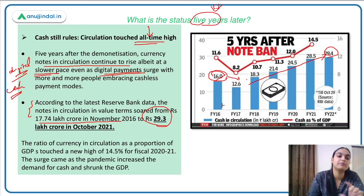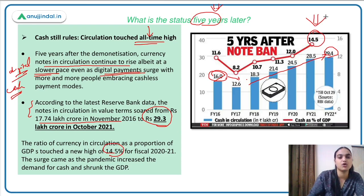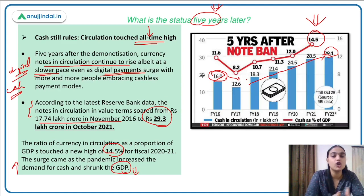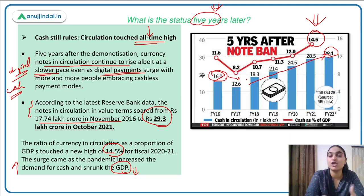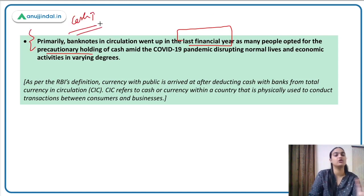If we compare currency in circulation as a proportion of GDP, that ratio has also reached an all-time high of 14.5%. This rise occurred because during the pandemic, GDP shrank while currency in circulation increased. People started hoarding cash as a precautionary measure during lockdowns, keeping more cash to buy groceries and other items. The major reason for the increase in cash in circulation last financial year was this precautionary holding of cash during the pandemic.